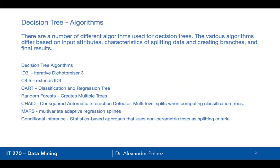There are a number of different algorithms used for decision trees. A couple of them are ID3, which is an iterative dichotomizer — basically creating a two-way split between nodes. C4.5 extends ID3; we'll actually be using an extension called C50. CART is a classification and regression tree algorithm, and we'll talk about that one too.